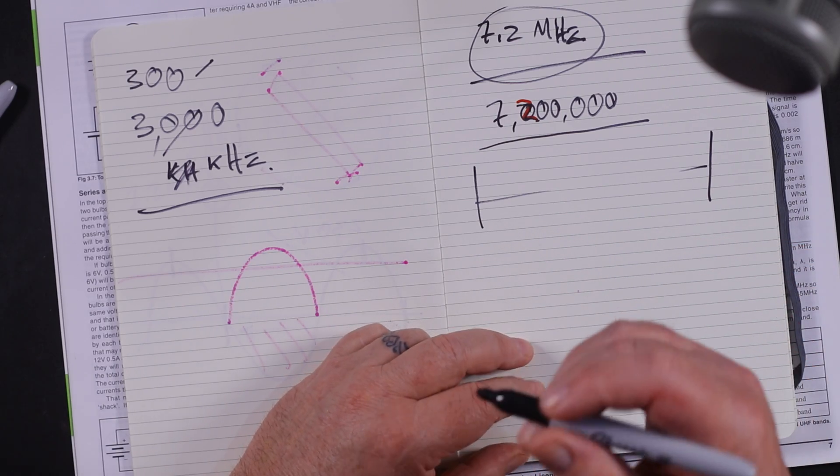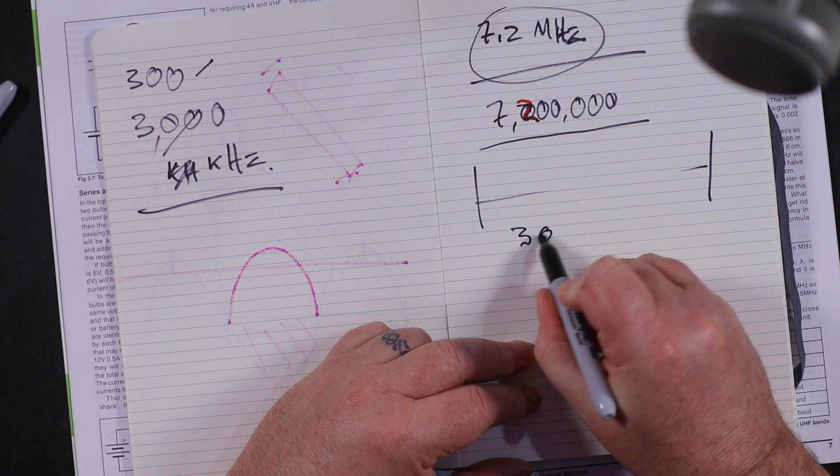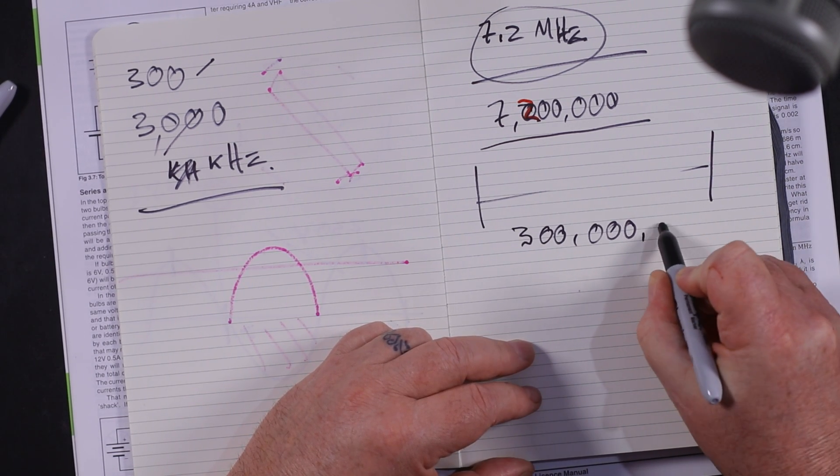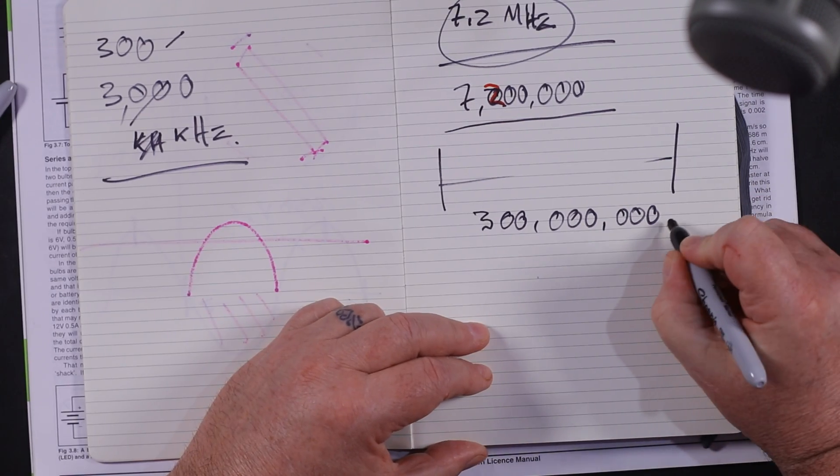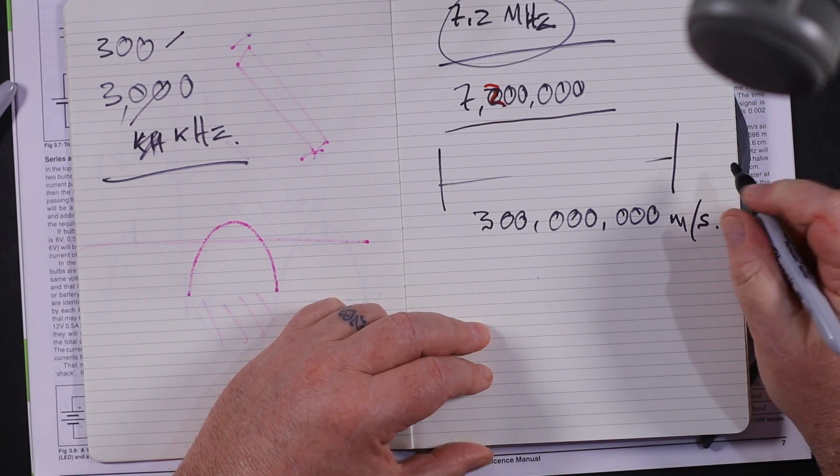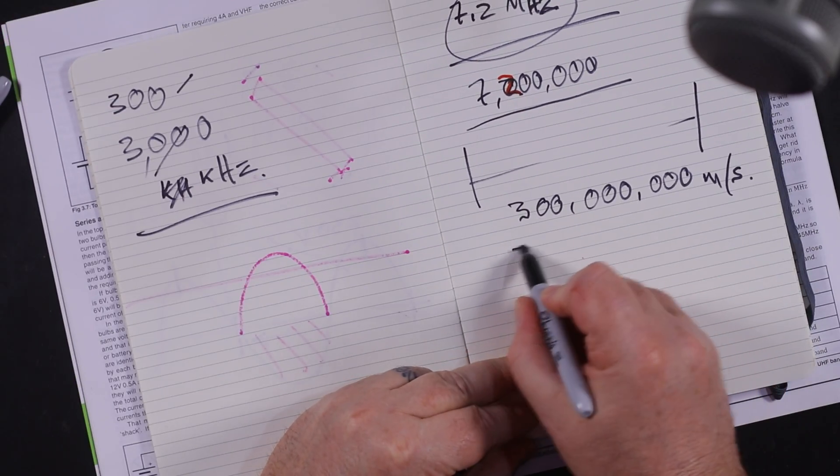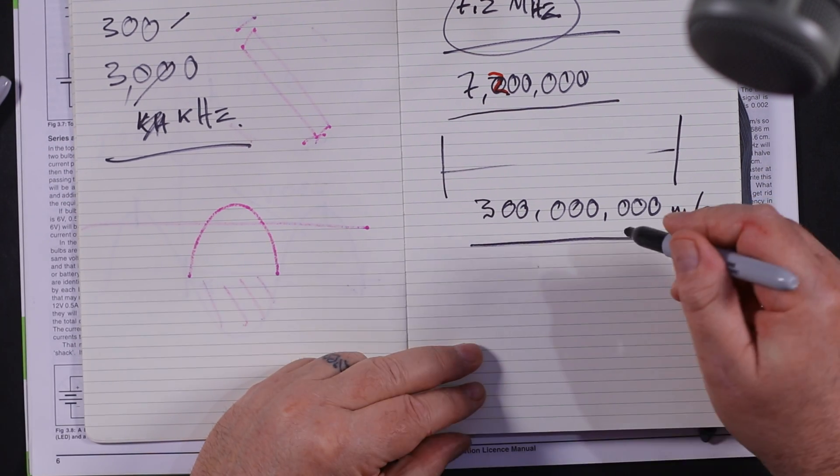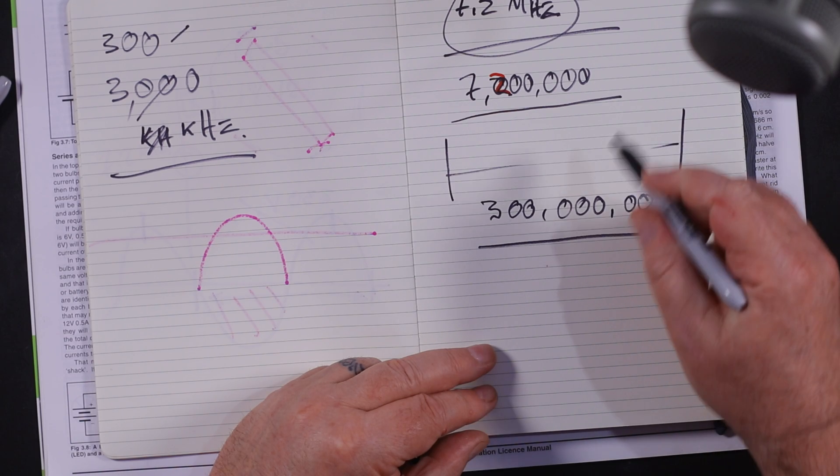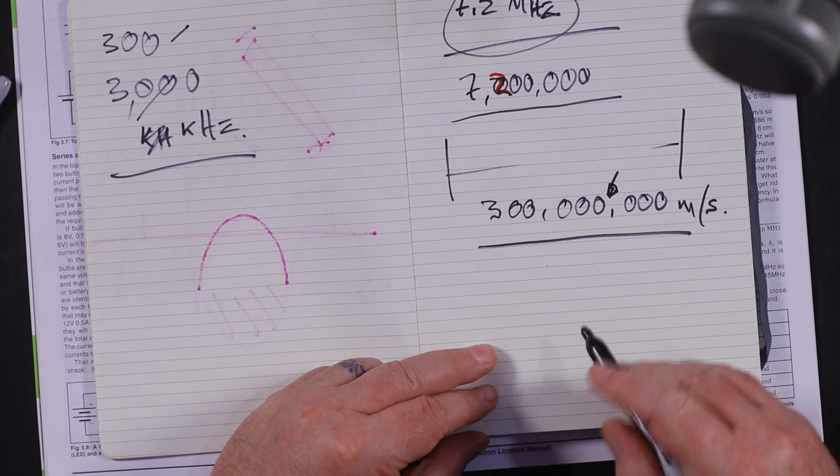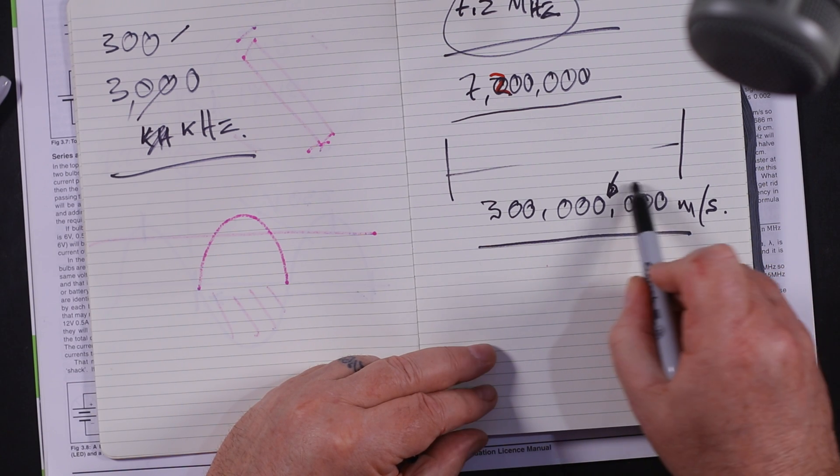What does that actually mean? That means in the space of one second, this vibration, this frequency, happens literally 7 million 200,000 times in one second. It's quite amazing really, because RF travels at the speed of light, which in all intents and purposes is 300 million meters per second. That's 300,000 kilometers a second, because from meters to kilometers is a drop of a thousand.